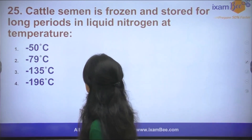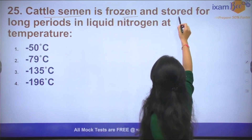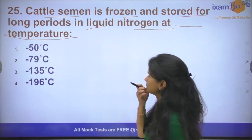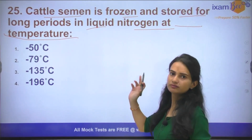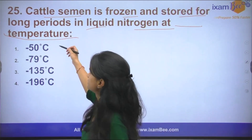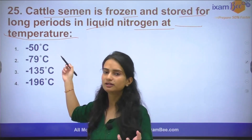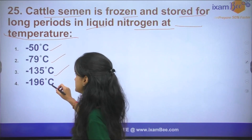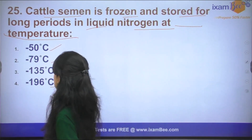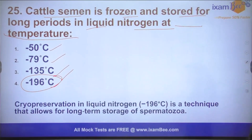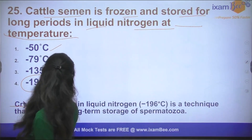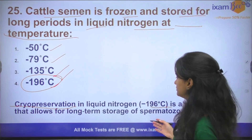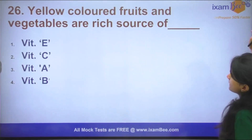Question number 25: Cattle semen is frozen and stored for long periods in liquid nitrogen at what temperature? We store cattle semen to preserve it for artificial fertilization so that its viability is not lost. The options are -50°C, -79°C, -135°C, or -196°C. The answer is -196°C. This is called cryopreservation — it is done in liquid nitrogen at -196°C for long-term storage so that we can use it later.